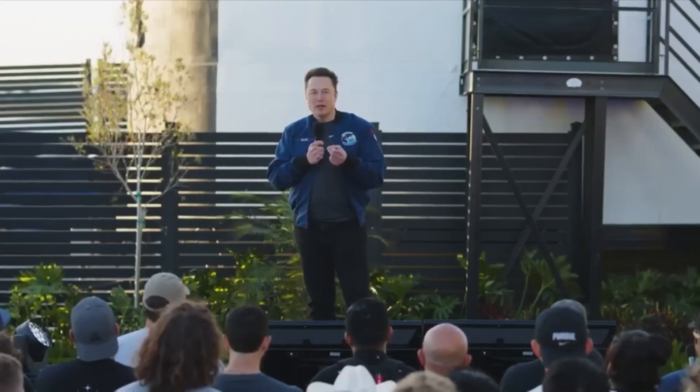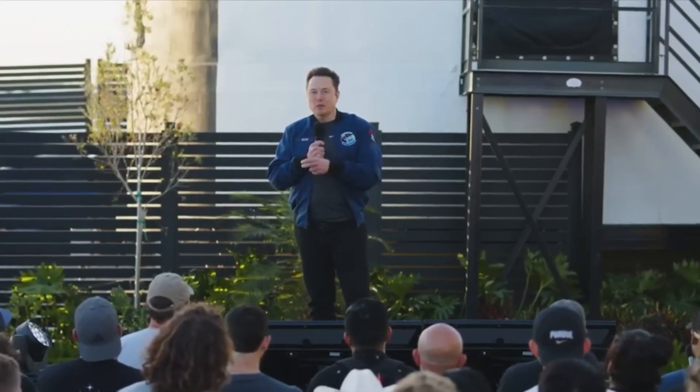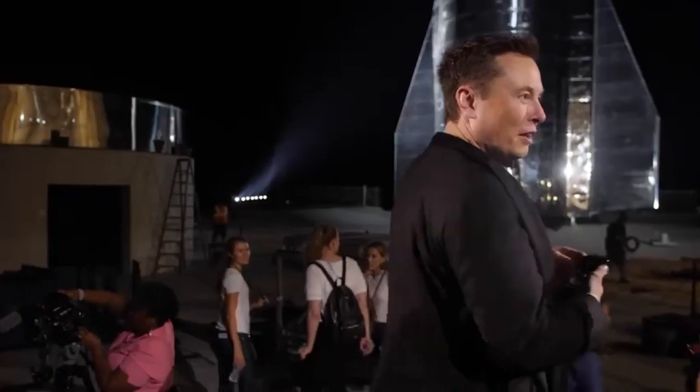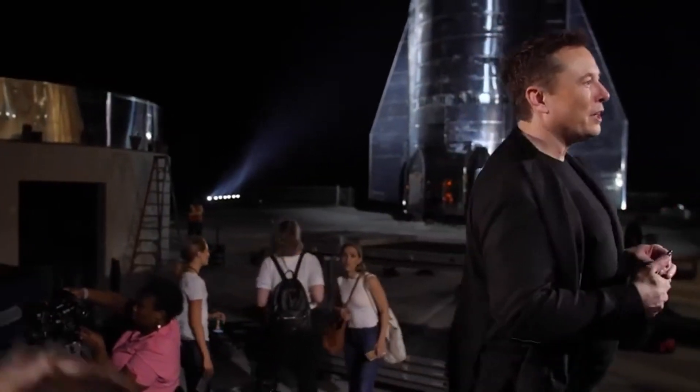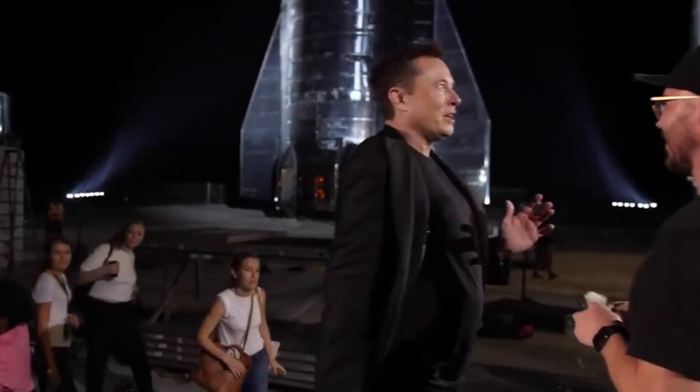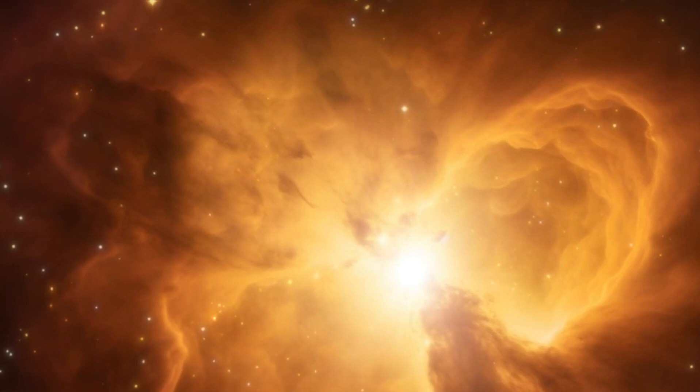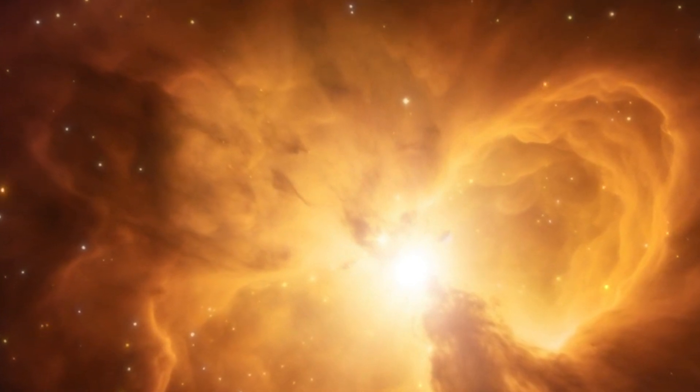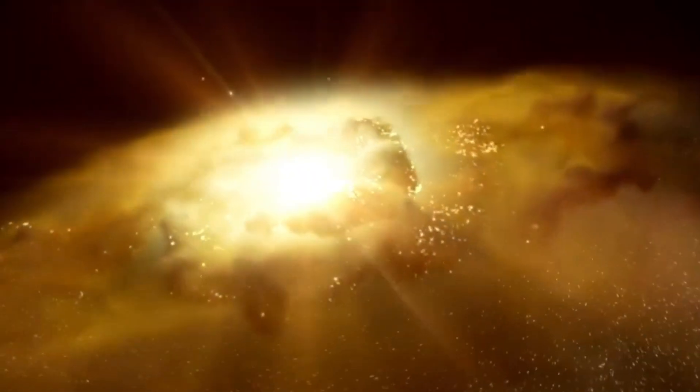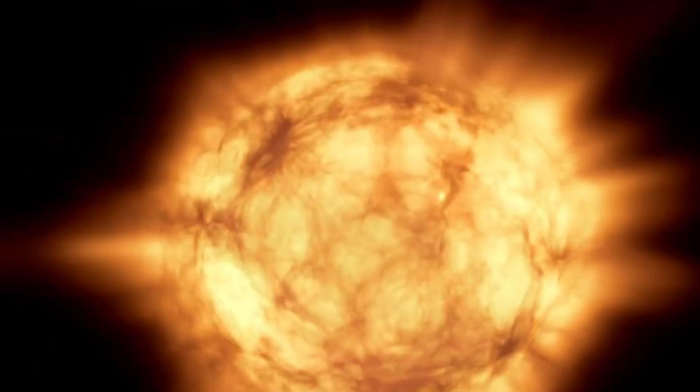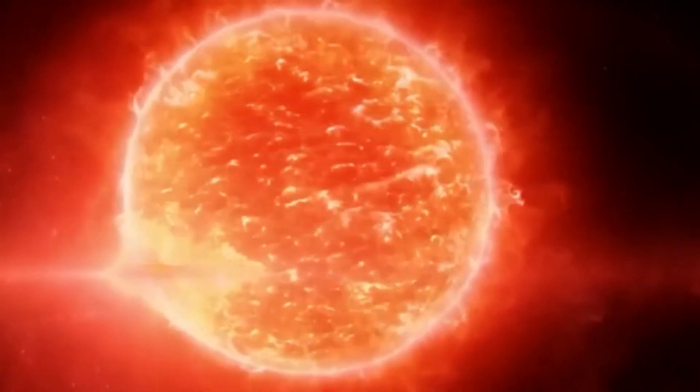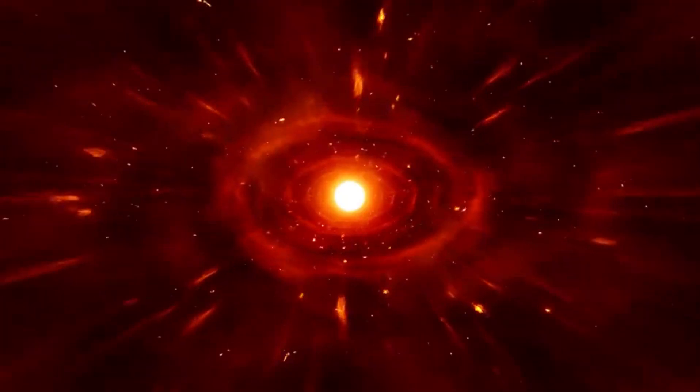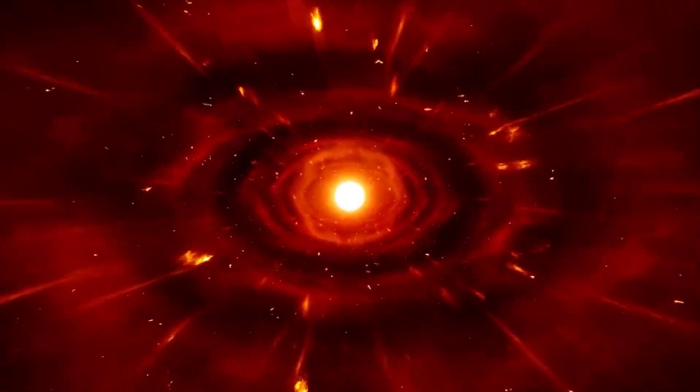Betelgeuse is classified as a semi-regular variable star, meaning it experiences multiple cycles of fluctuating brightness due to variations in its size and temperature. This red supergiant is known to exhibit two main periods of light pulsation. The first period lasts 400 days and is believed to be caused by pulsations in the fundamental mode. The second period is a longer cycle of approximately 5.6 years, and its origin remains unknown.